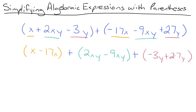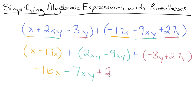And now all we have to do is simplify each set of parentheses. x minus 17x is negative 16x. 2xy minus 9xy is negative 7xy, so we're just going to do minus 7xy. And negative 3y plus 27y is 24y, so we're going to add 24y. Our final answer is negative 16x minus 7xy plus 24y.